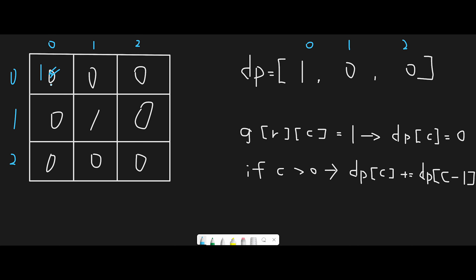I update the first position with 1 because: what if the (0,0) position is already 1? In that case there is an obstacle at the start, so the robot cannot move anywhere, and we should return 0 immediately. But since (0,0) is 0 — meaning a normal path — the robot can definitely reach this position, so we update the first position with 1.